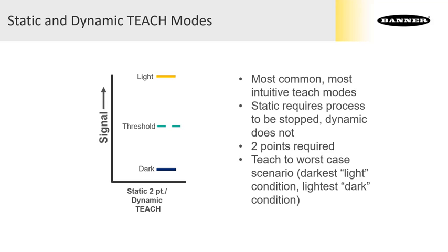You show the amplifier the first condition, either output on or off, teach it, and then the other condition, and teach it. Doesn't matter which order. The amplifier measures the light intensity at both conditions, and it splits the difference, which is where it sets that threshold.